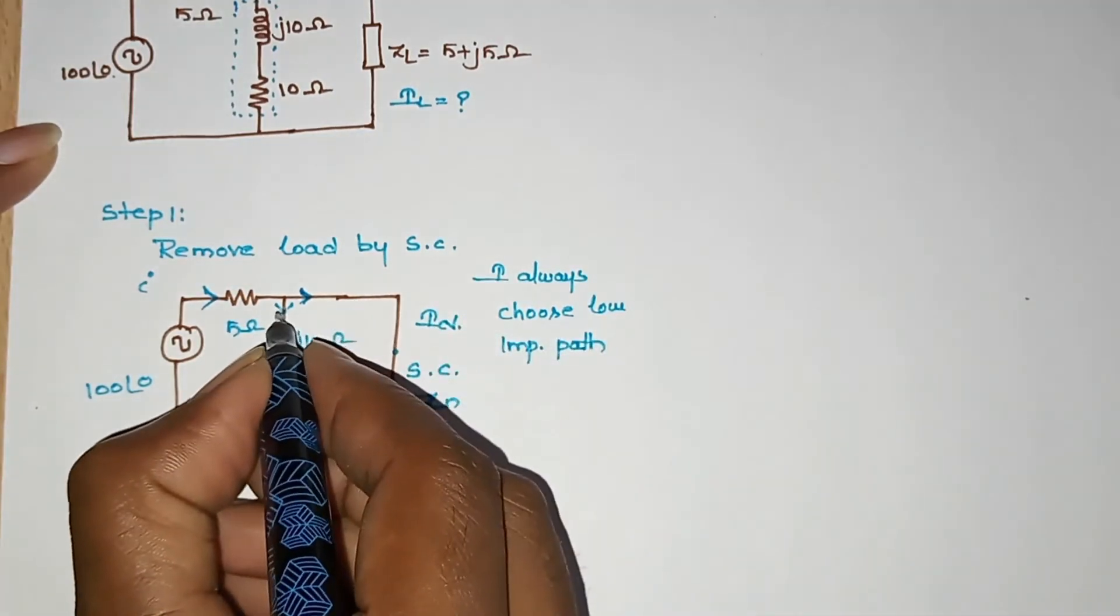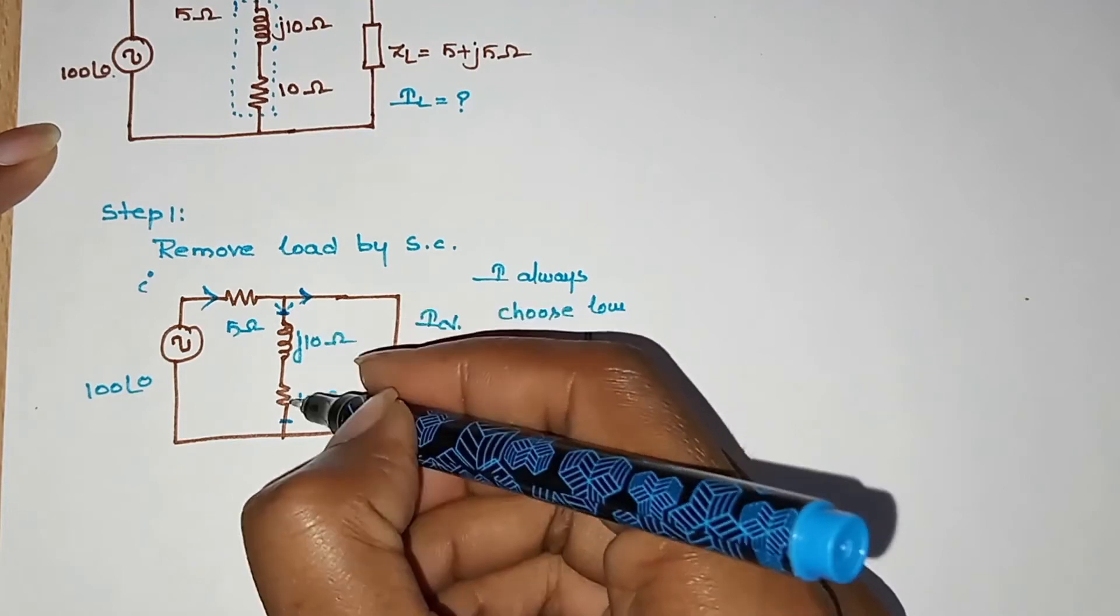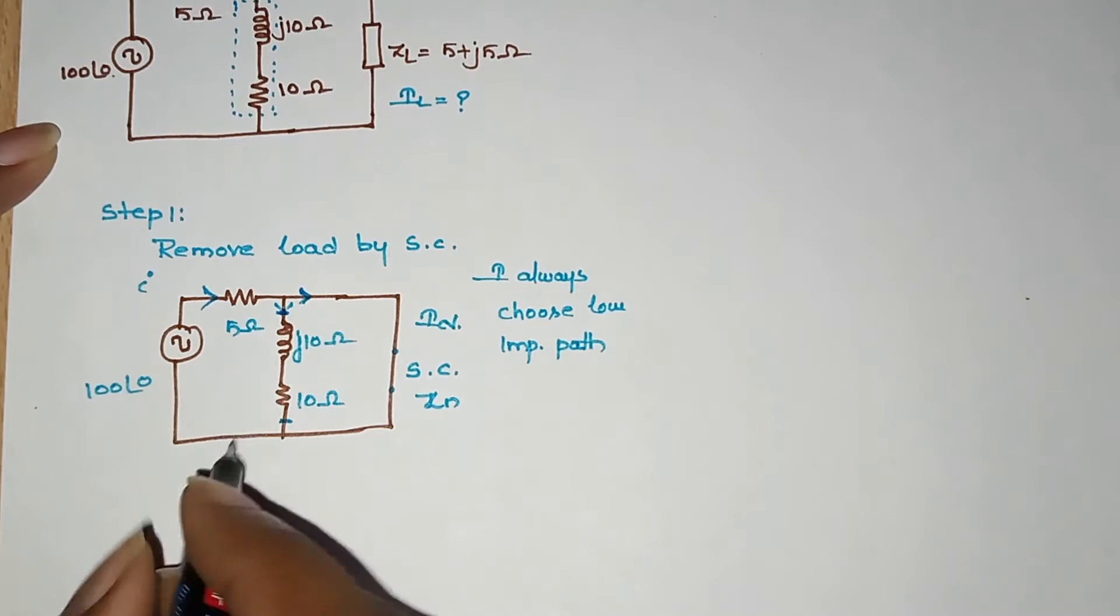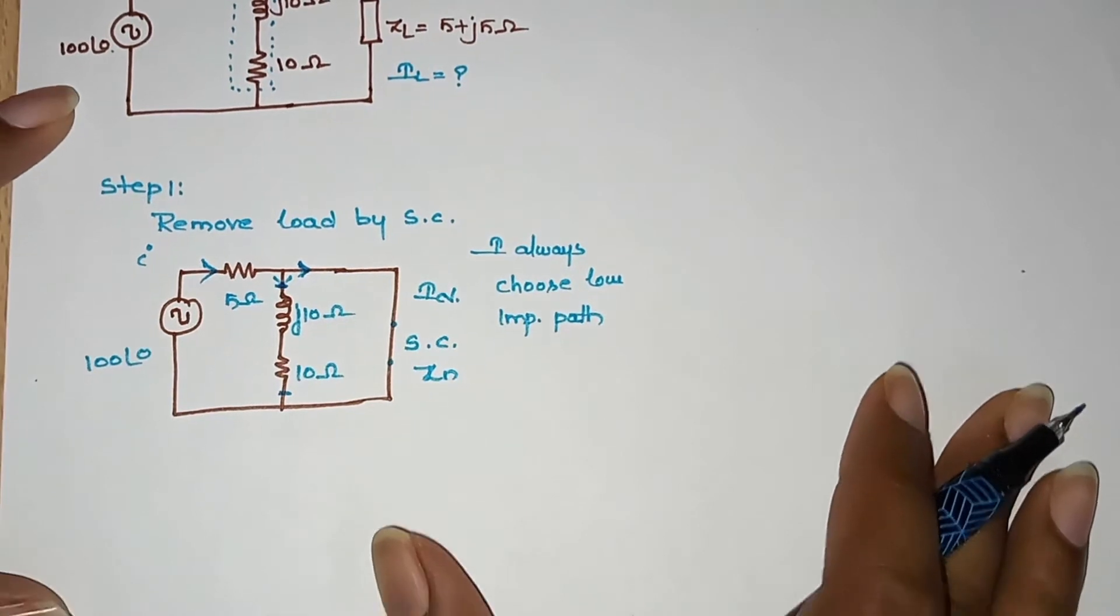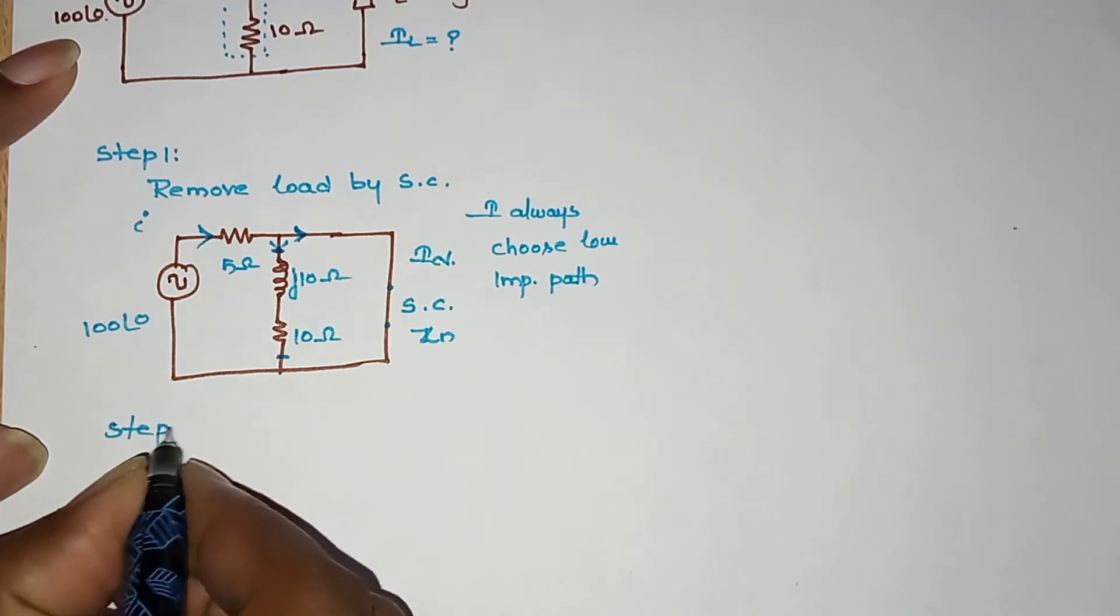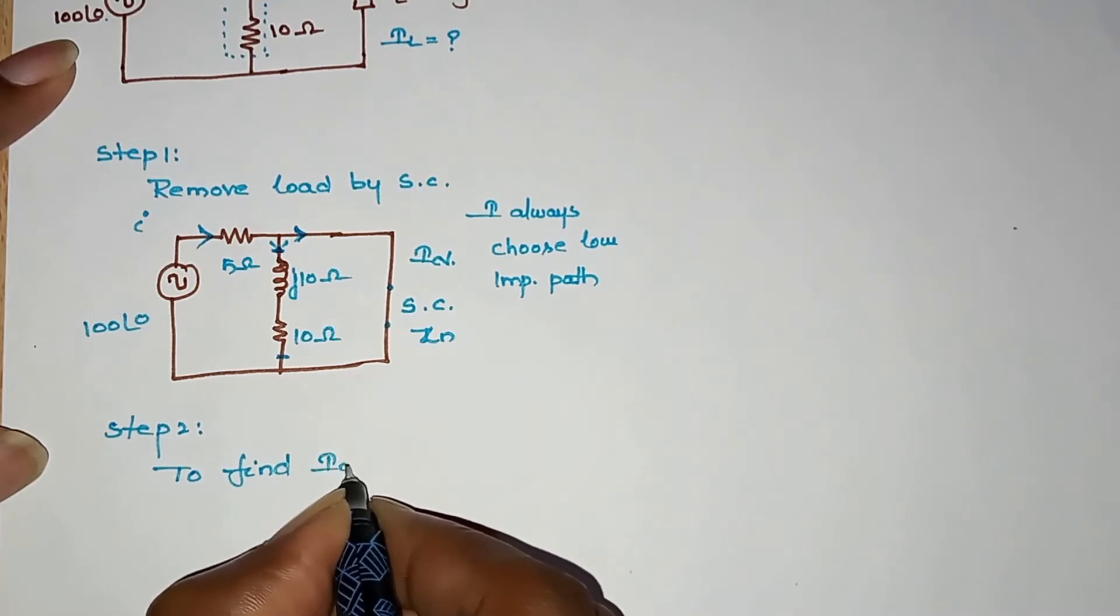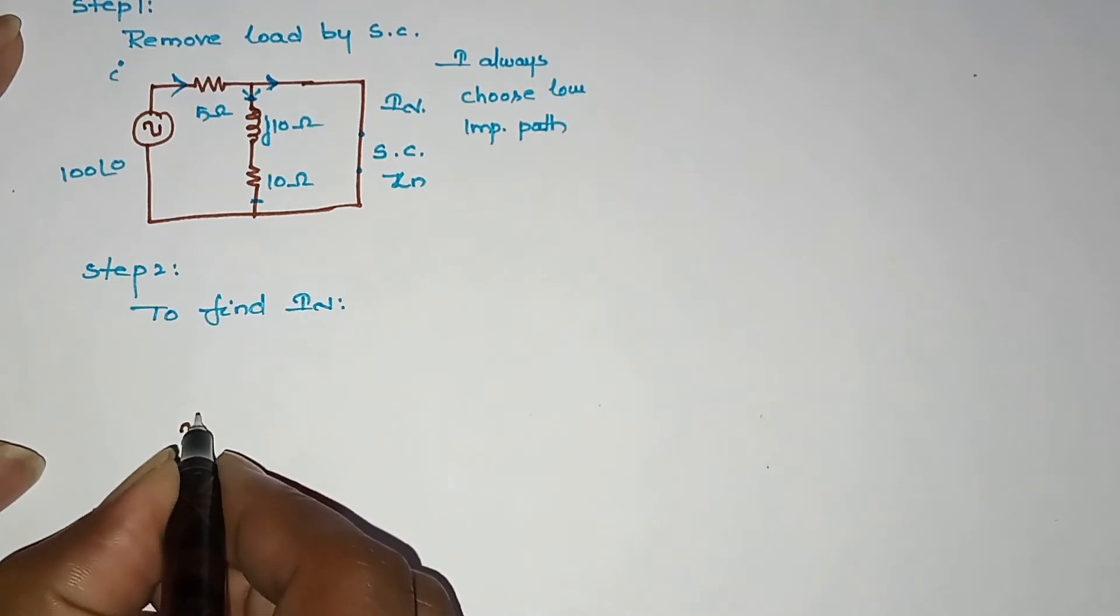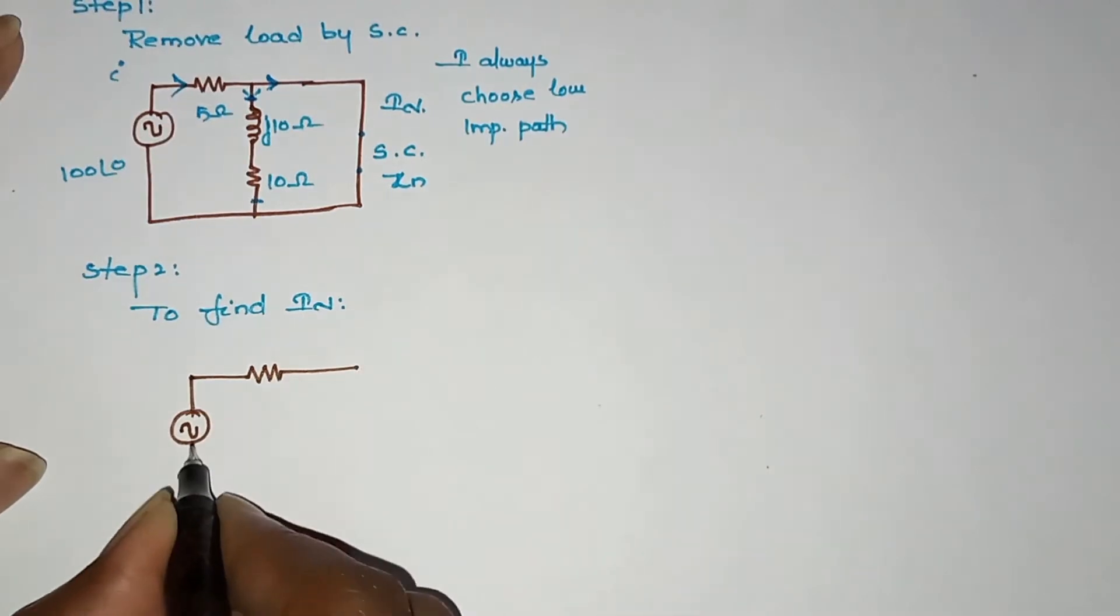The low impedance path is the source circuit. Step 2: to find IN. So we have to redraw the circuit. If we redraw the circuit, we have to show the voltage value and the resistance value.